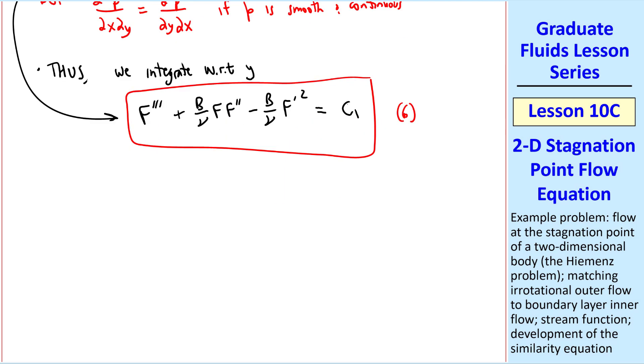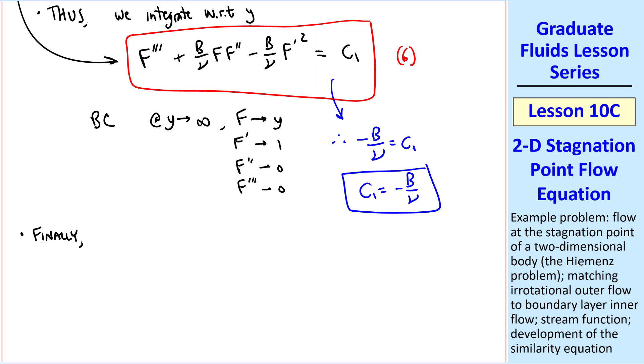Now let's apply a boundary condition to find this constant c₁. Namely, from the boundary layer's point of view, as y goes to infinity, f must go to y, and it follows that f' goes to one, f'' goes to zero, and f''' goes to zero. So these two terms, which have f''' and f'', go to zero, as y goes to infinity, and this term goes to -b/ν. So six becomes -b/ν = c₁, or c₁ = -b/ν. So finally, equation six becomes f''' + b/ν·(f·f'' - (f')² + 1) = 0. I'll call that equation seven. This is now a similarity equation.